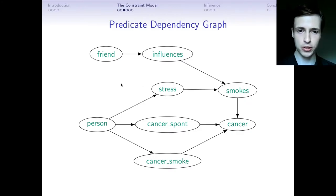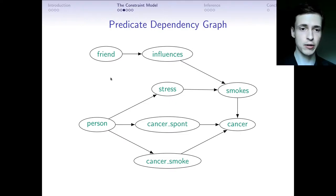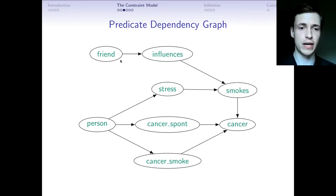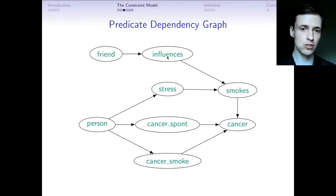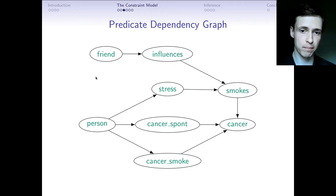Another important component of our model is the predicate dependency graph — a graph with a node for every predicate. For example, we draw an edge from friend to influences because there is a clause where influences is at the head and friend is mentioned somewhere in the body.